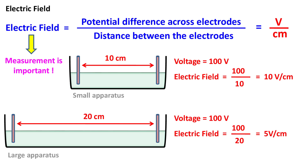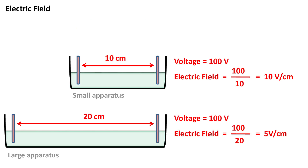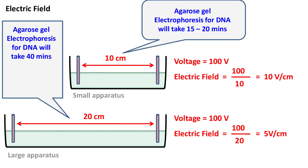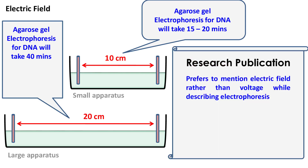If you are carrying out agarose gel electrophoresis of DNA, then electrophoresis will be completed in about 15 to 20 minutes in the first case. However, in the second case, because the electric field is half, the time taken for completion of electrophoresis will be doubled. Hence, all research publications will always mention the electric field while describing electrophoresis.